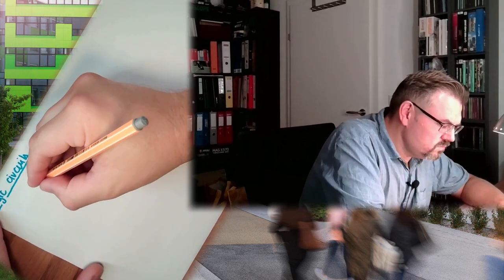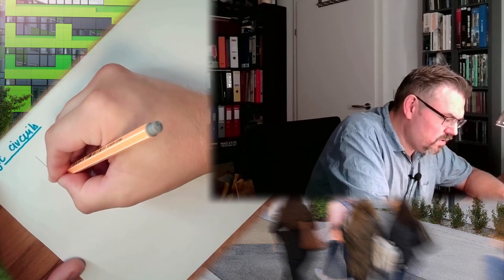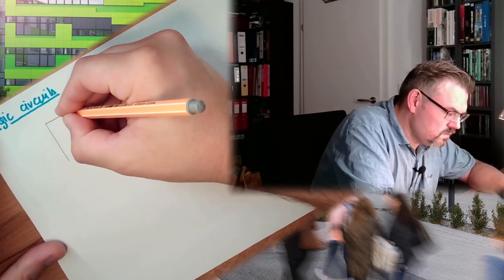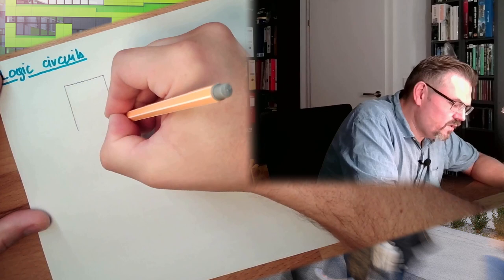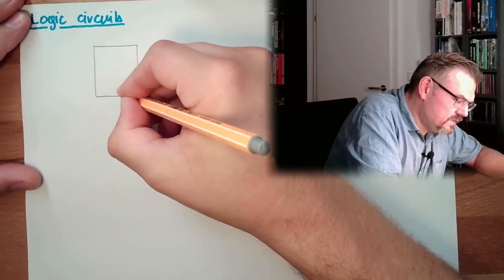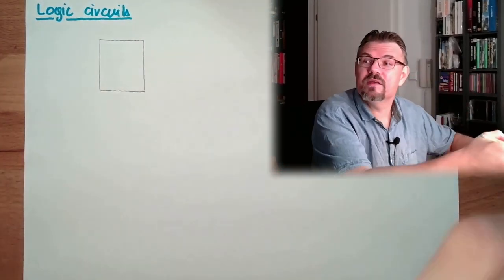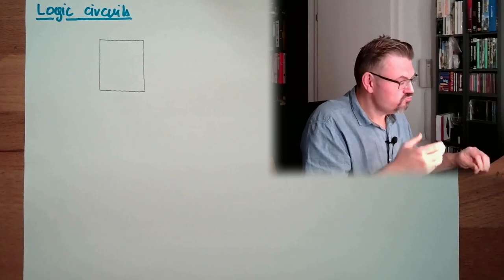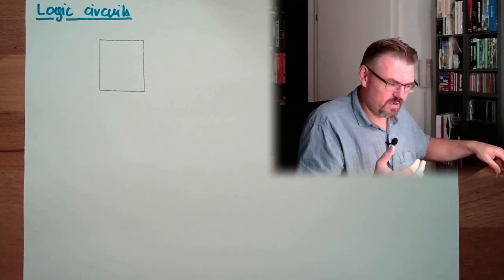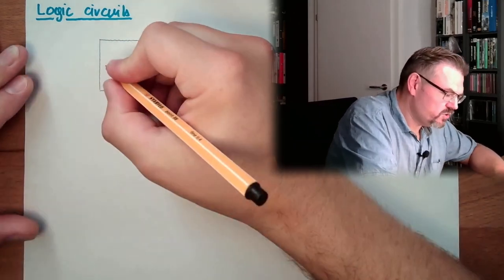Actually you can think about a logic circuit as a block. Here we have a block. We don't know exactly what is happening inside. We only see the outside because what is happening inside is pretty complicated. So this is the logic circuit.